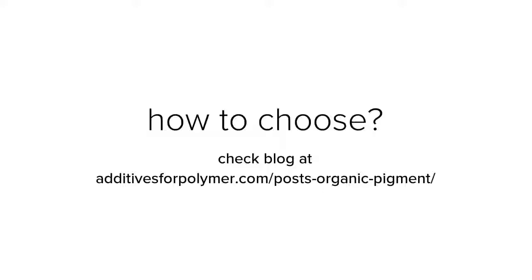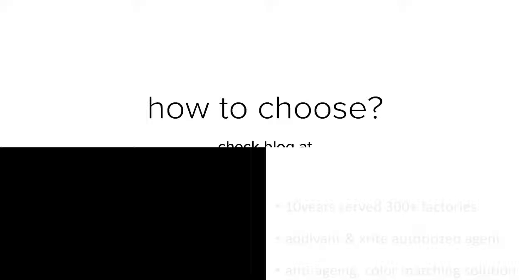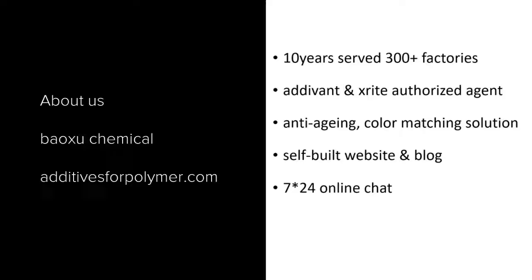For an overall introduction to organic pigments, please check our blog at additivesforpolymer.com/posts/organic-pigment. Baoshu Chemical offers a full range of organic pigments for plastics, providing coloring and anti-aging solutions for polymers.